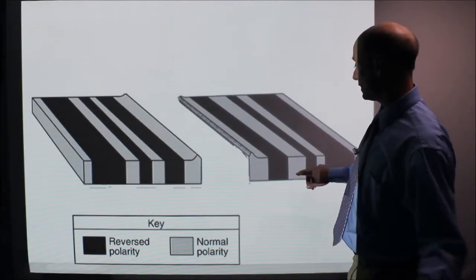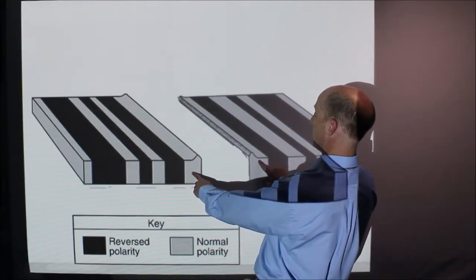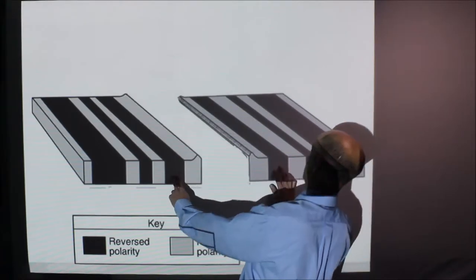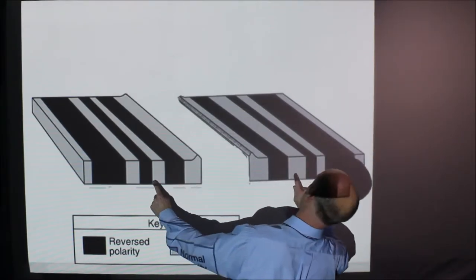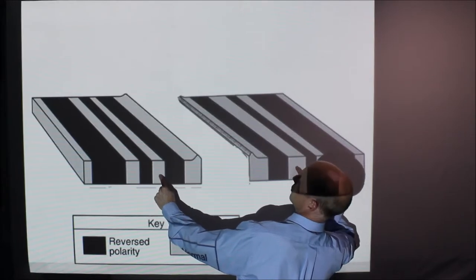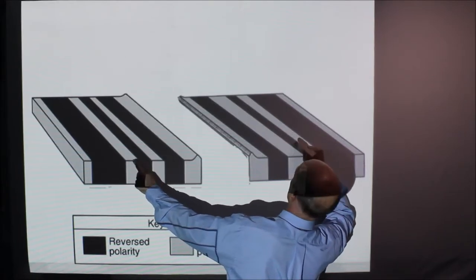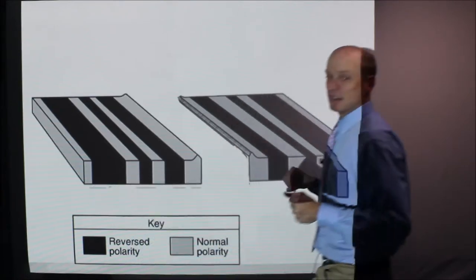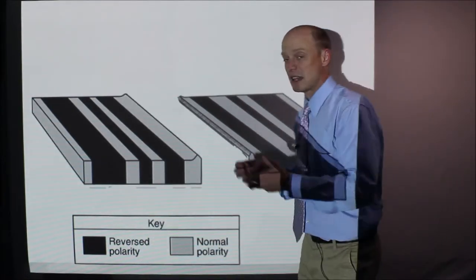And what I mean by that is like this layer and this layer, they formed at the same time. This layer reversed the same thickness. This layer is supposed to match up. It's just not drawn that great. But this layer and this layer and this layer, these are the same. So they match up. They have the same pattern on either side.